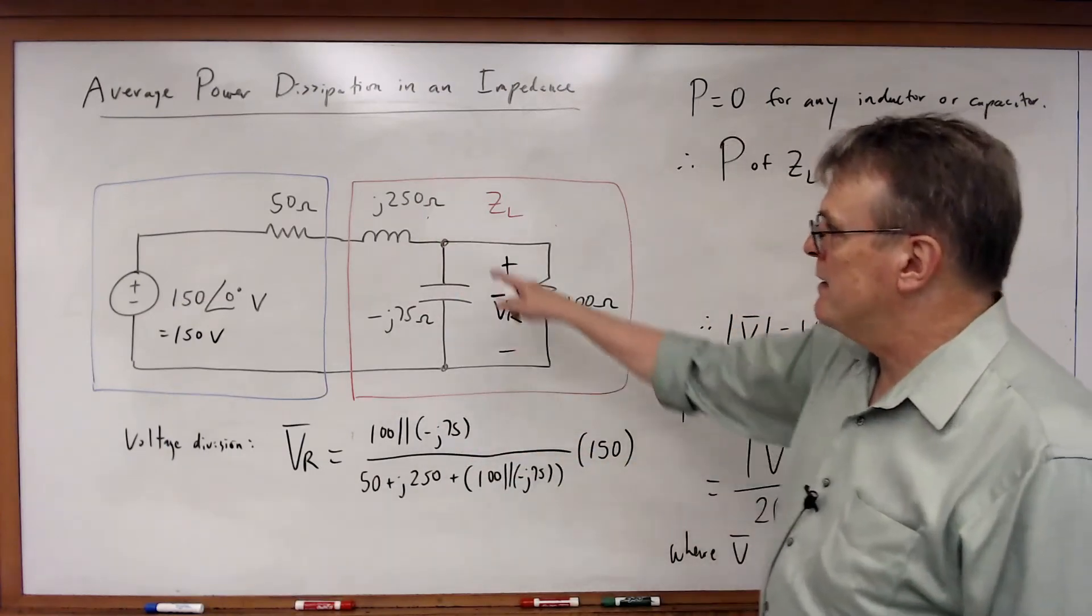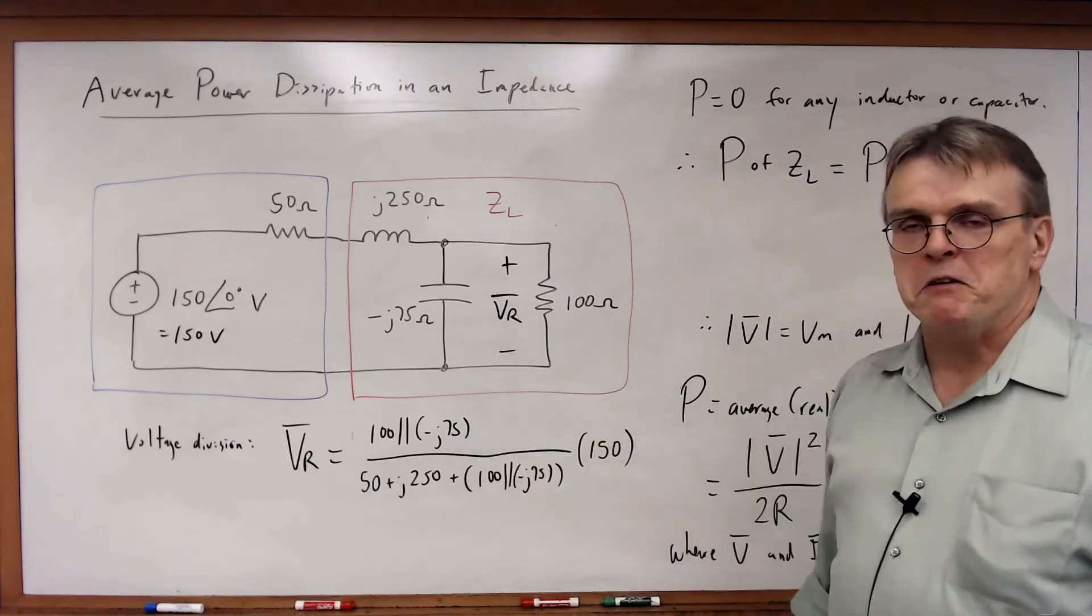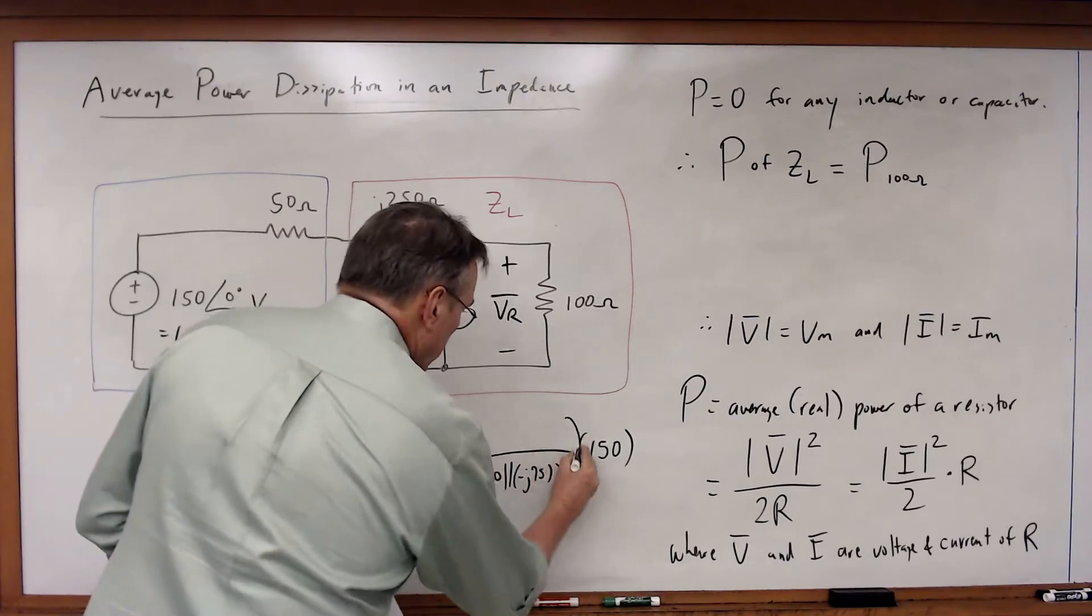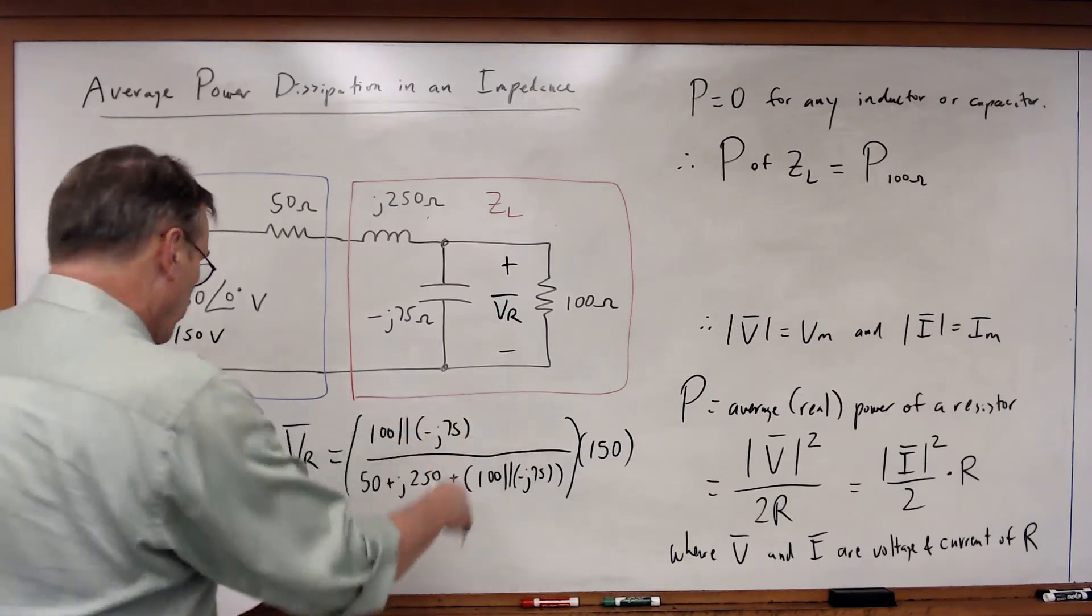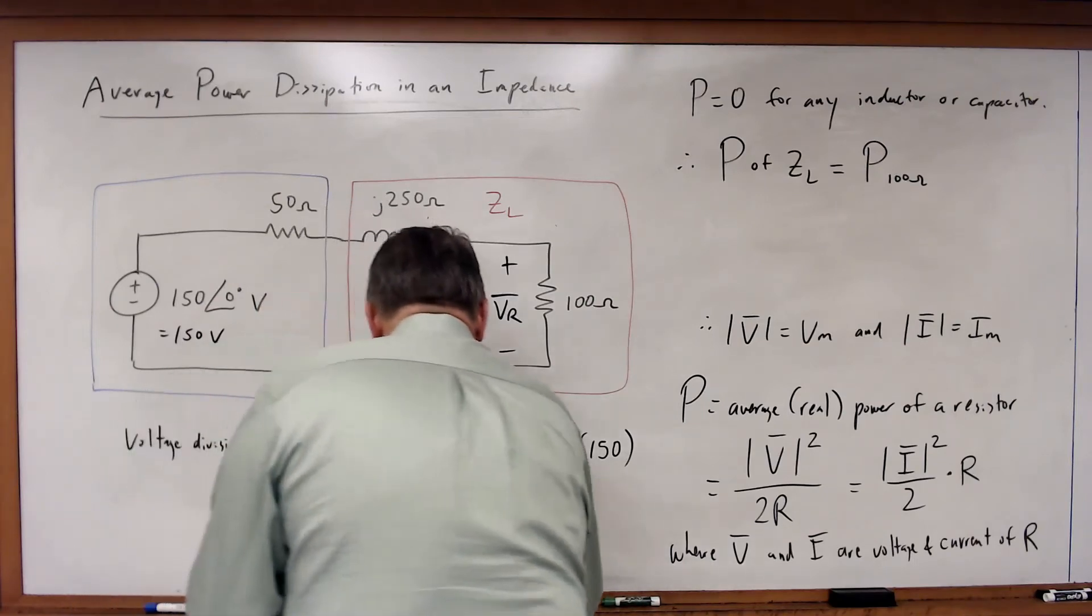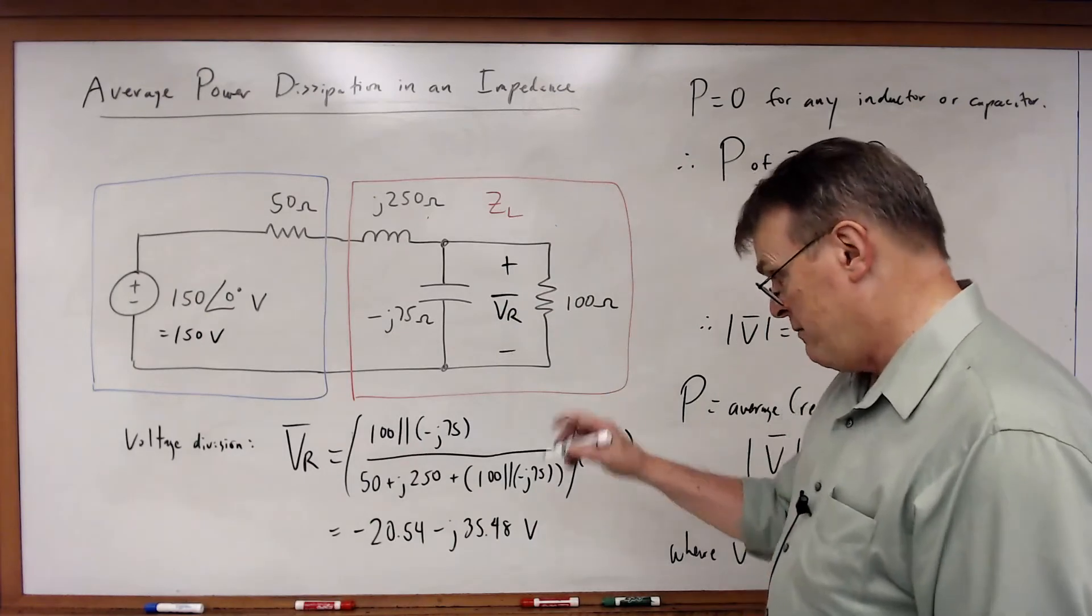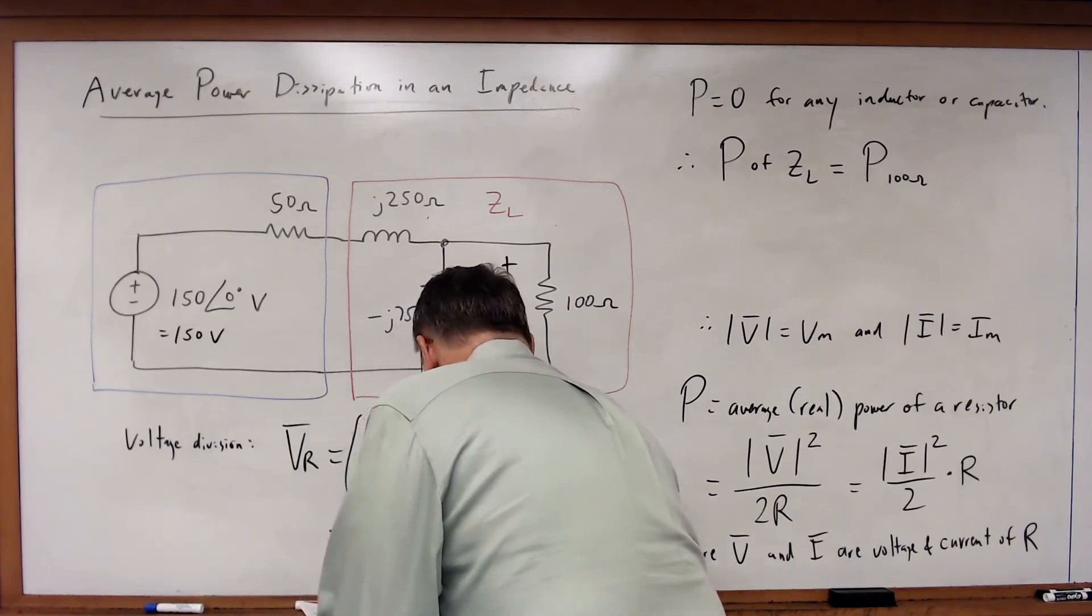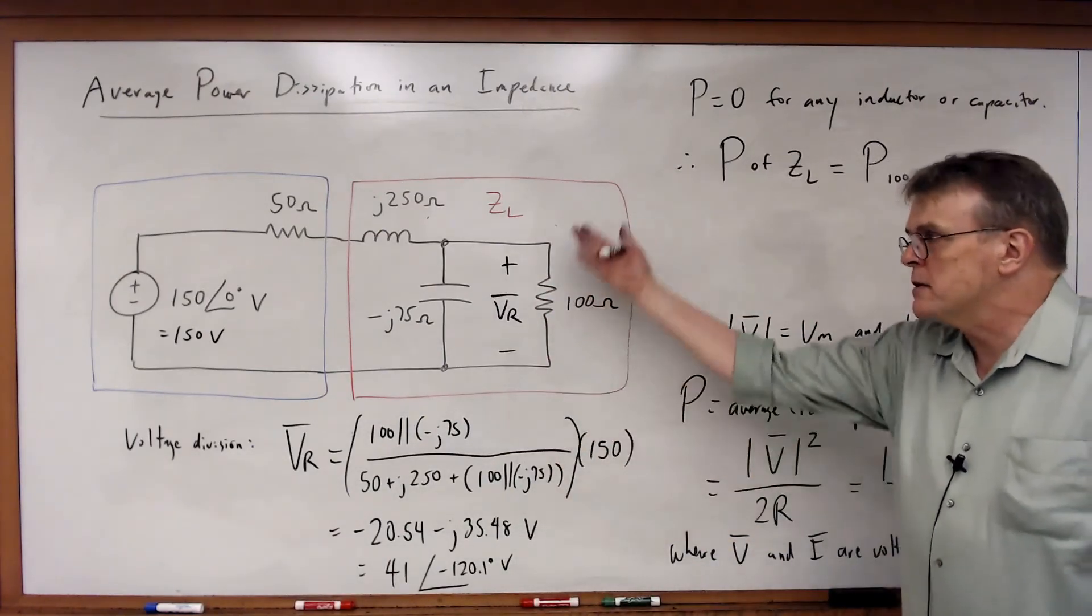I could do this nodally, I could write an equation at this node and then calculate VR that way. But in this case, I'm just applying voltage division, which is derived from nodal analysis. If I calculate the value of this, I'm going to skip that over—that's just something you can plug into your calculator or Mathematica. But if I calculate this, what I'm going to get is VR is equal to minus 20.54 minus J35.48 volts, which in polar form is equal to 41 at a phase angle of minus 120.1 degrees volts. That's the phasor voltage across this resistor.